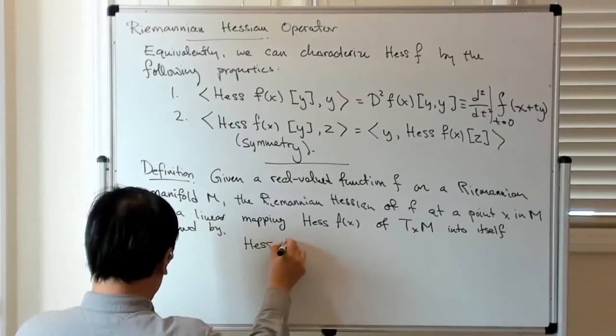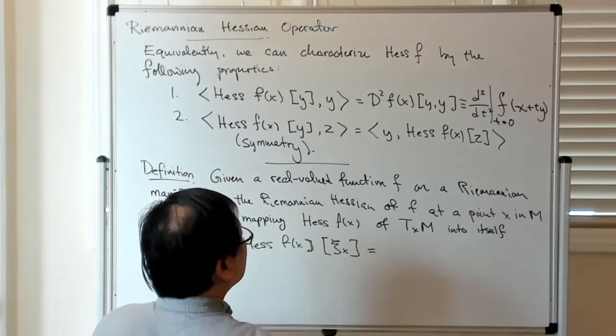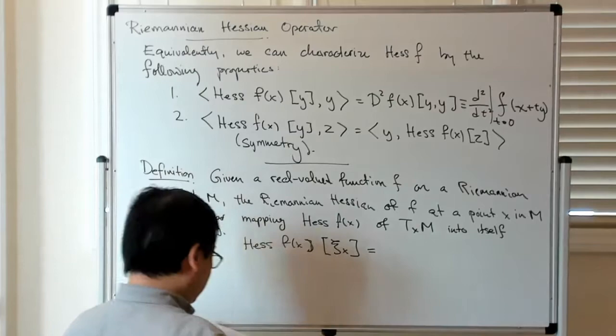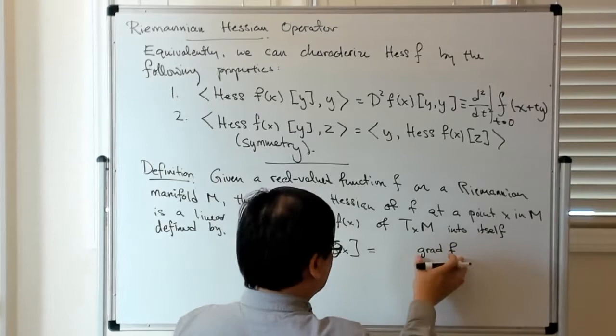So you have this Hessian f of x and you move in a particular direction. So if you're on a Riemannian manifold you know of course that if you give me a scalar value function I can construct the gradient of this. So you have grad of f, the gradient f gives you a vector